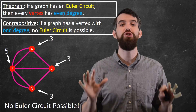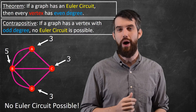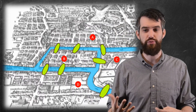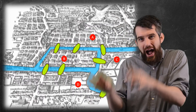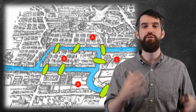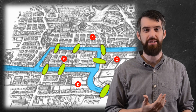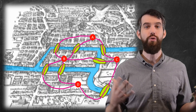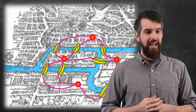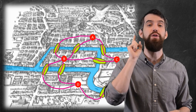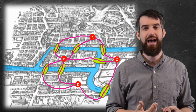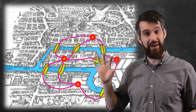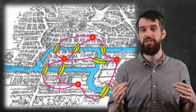Now let's return to the original problem that motivated all of this graph theory. This particular graph came from the Bridges of Königsberg problem, where there's a river, two islands, two sides, and vertices A, B, C, D representing four land masses connected by seven bridges. The question Euler originally posed was: can you travel all seven bridges exactly once? Now we know the answer is no — it is not possible, because every one of these vertices is odd, so there is no Euler circuit.